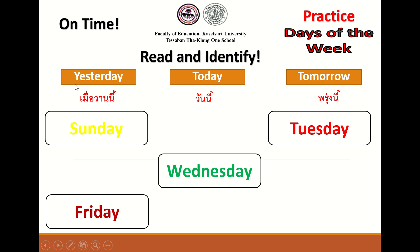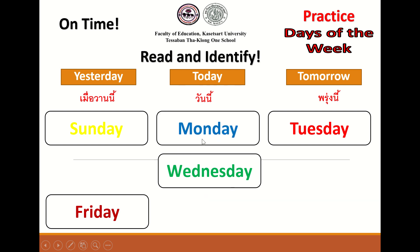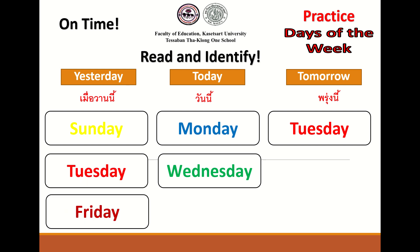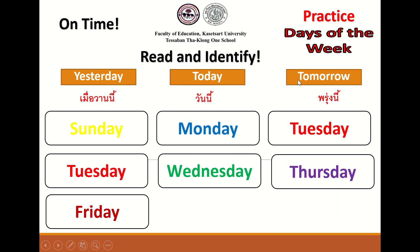If the day yesterday was Sunday, what is the day today? Very good — it's Monday. What will be the day tomorrow? It's Tuesday. Do you understand? Next, number two: If the day today is Wednesday, what was the day yesterday? Very good — it's Tuesday. And what will be the day tomorrow? Thursday. Perfect!